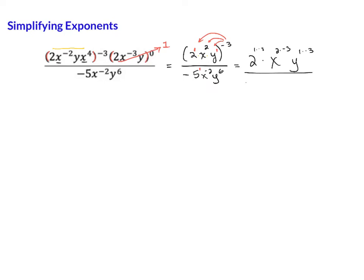And again, on the bottom, we still have negative 5 to the 1, x to the negative 2, and y to the 6.